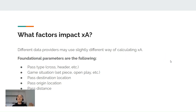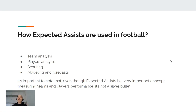What factors impact expected assists? Different data providers may use slightly different ways of calculating it, but the foundational parameters are: pass type, game situation, pass destination location, pass region location, and pass distance. How are expected assists used in football? To put it briefly, they are used for team analysis, player analysis, scouting, modeling, and forecasts.